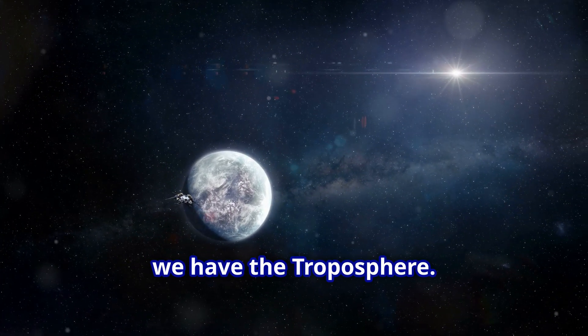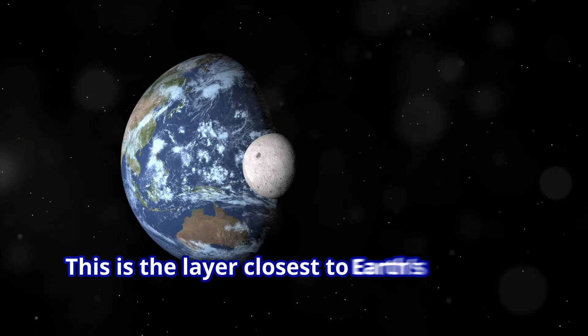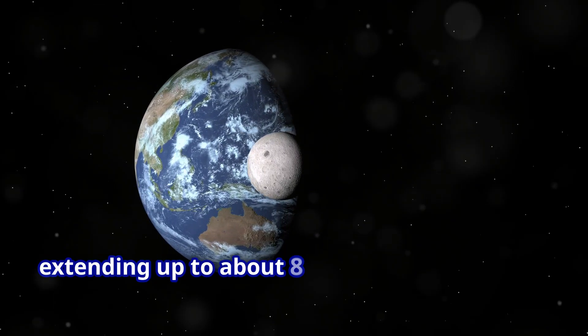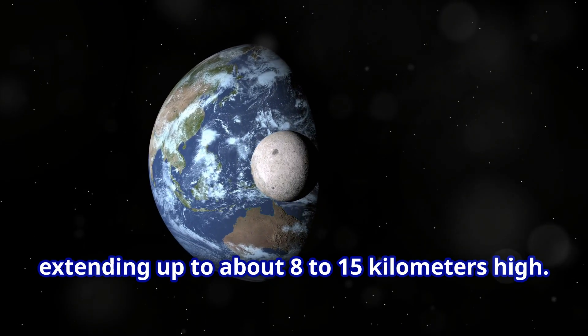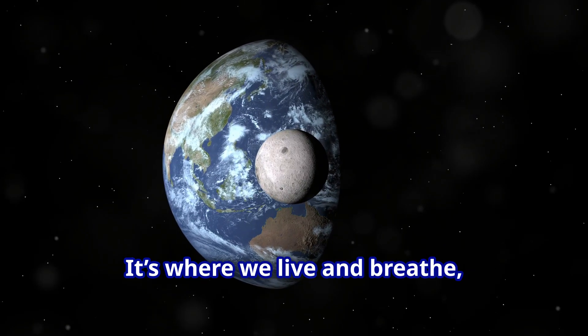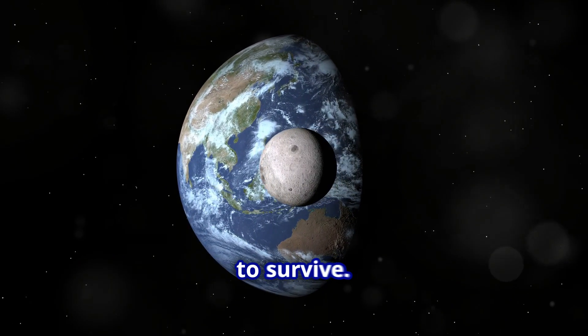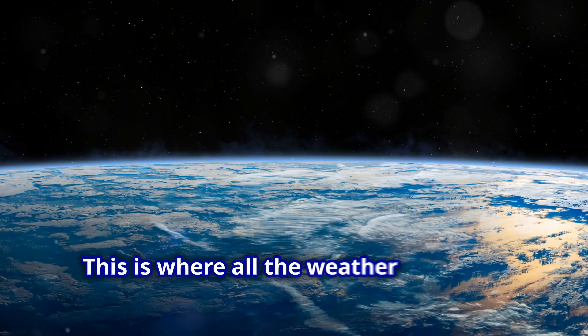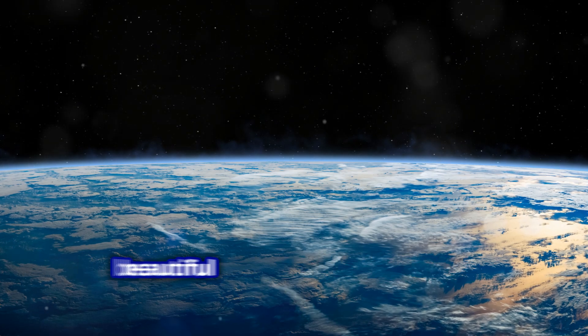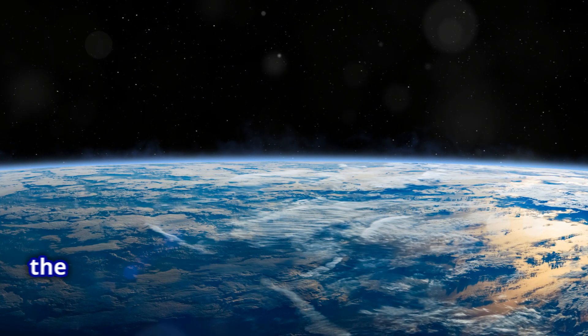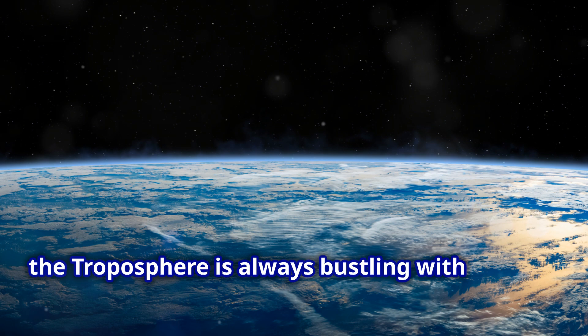First up, we have the troposphere. This is the layer closest to Earth's surface, extending up to about 8 to 15 kilometers high. It's where we live and breathe, and it's packed with all the air we need to survive. This is where all the weather happens. From thunderstorms with lightning to beautiful rainbows after the rain, the troposphere is always bustling with activity.